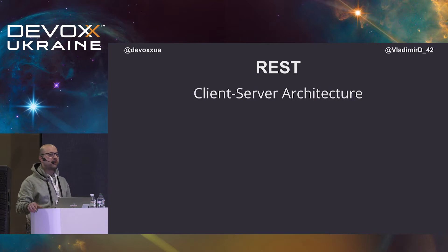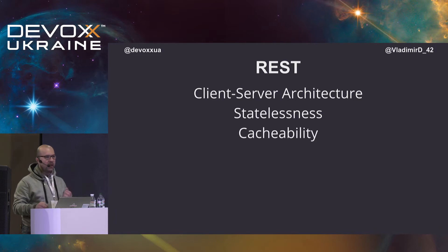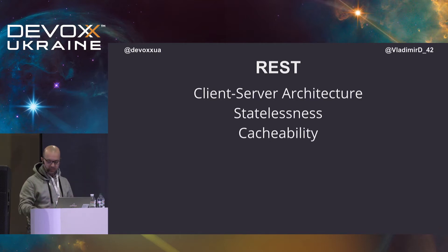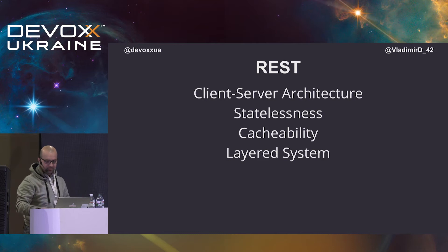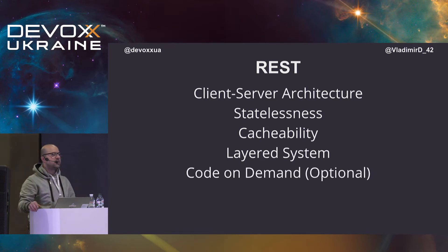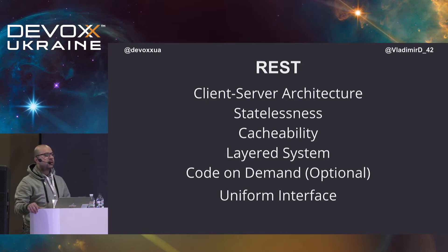So what is REST? Client-server architecture — there is a client and there is a server, with separation of concerns. Statelessness — the server has no context or knowledge about the client; everything the server needs to respond to the client's request must be sent in the request. Cacheability — the server has the option to say whether every response should be cached, for how long, and everybody should behave that way. Layered system — the client has no clue if it's talking directly to the server or going through multiple layers like proxies, gateways, and firewalls. Code on demand — this is optional; it means the server can send executable code to the client. I've never seen this in practice. And last but not least, uniform interface, which says different parts of the system can evolve independently.